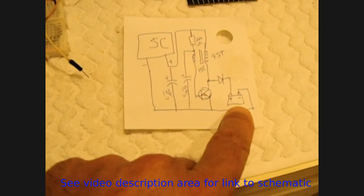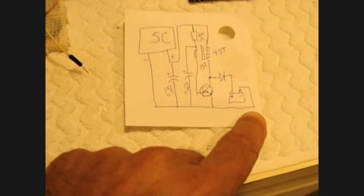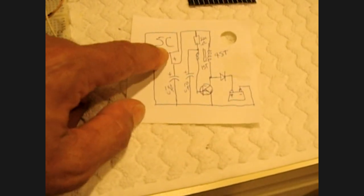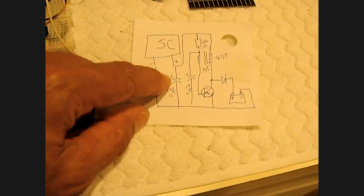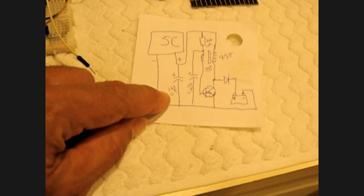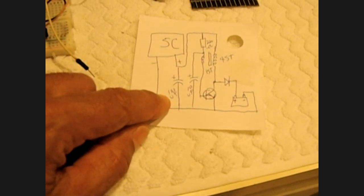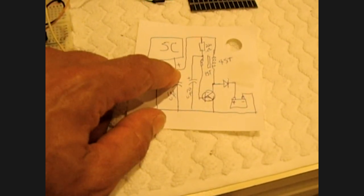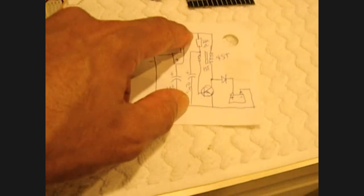The positive from the solar cell goes to the plus on an electrolytic capacitor, 100 microfarad. The positive from the solar cell goes to the top rail which connects to a 220 ohm resistor.